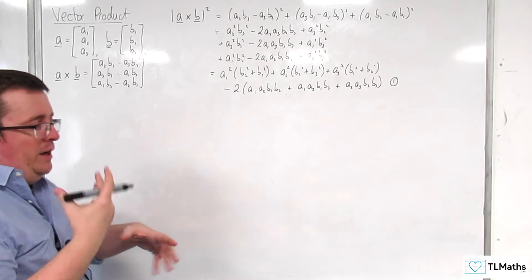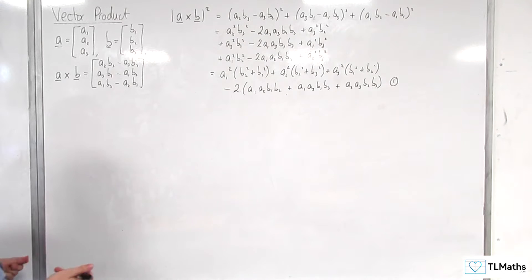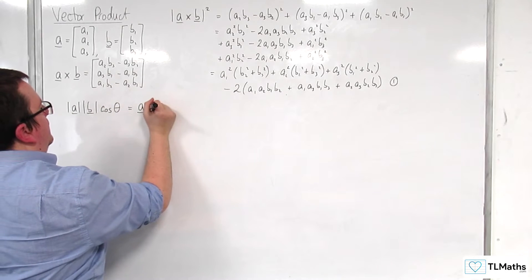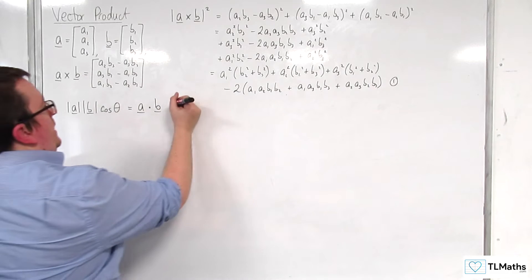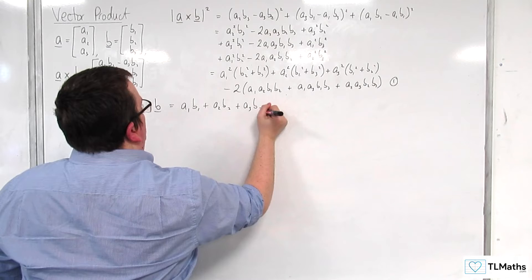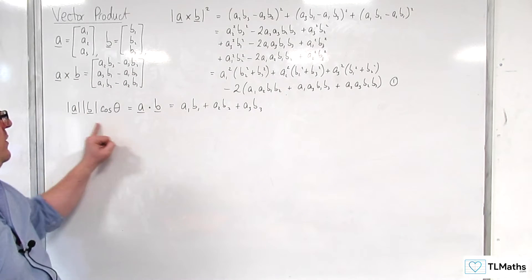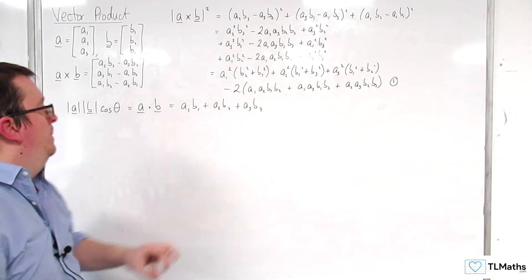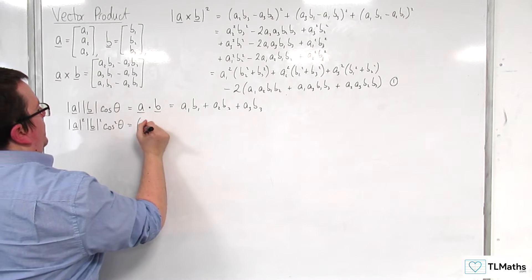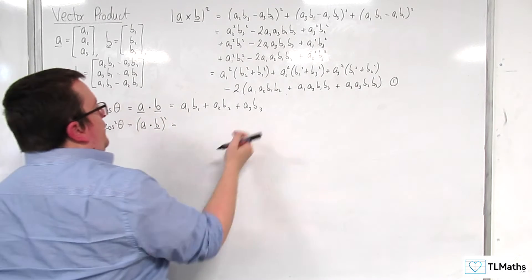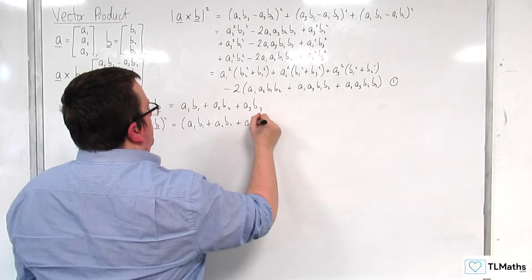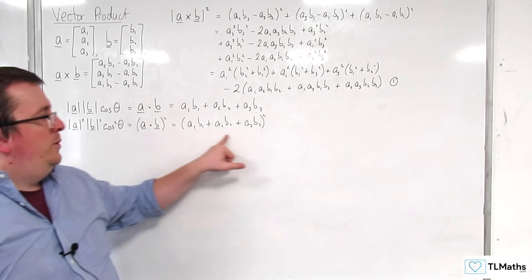I'm now going to look at the scalar product, because we know there's a link between the scalar product and the vector product. We have |a||b|cosθ, and we know this equals a·b, which is a₁b₁ + a₂b₂ + a₃b₃. What I'm going to do is square both sides. So we have |a|²|b|²cos²θ = (a·b)² = (a₁b₁ + a₂b₂ + a₃b₃)².